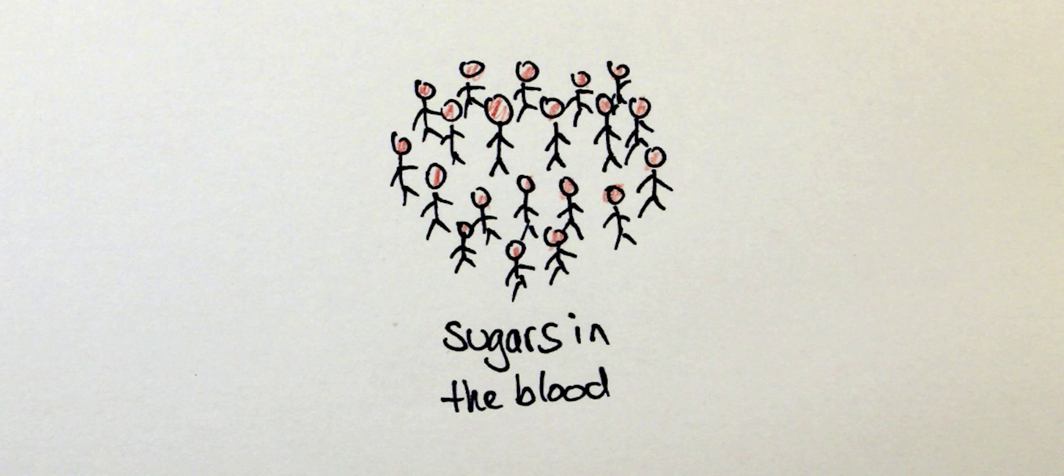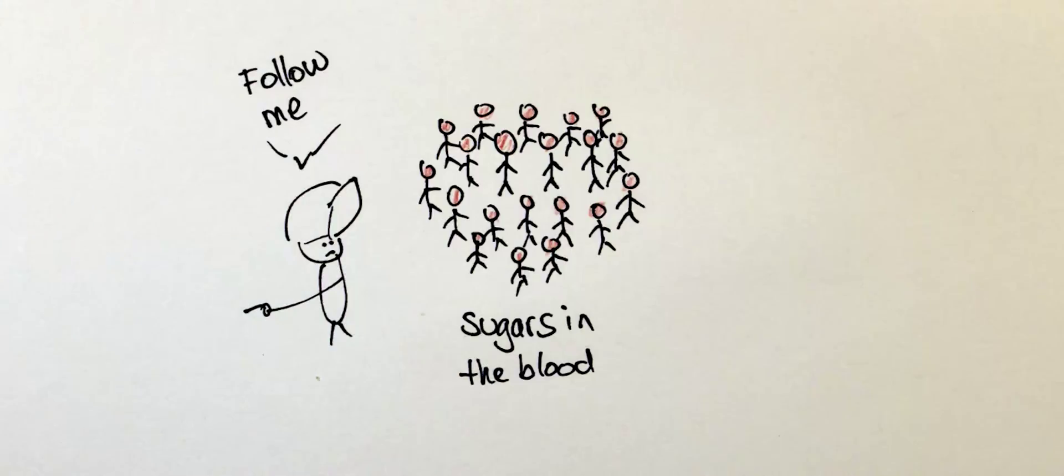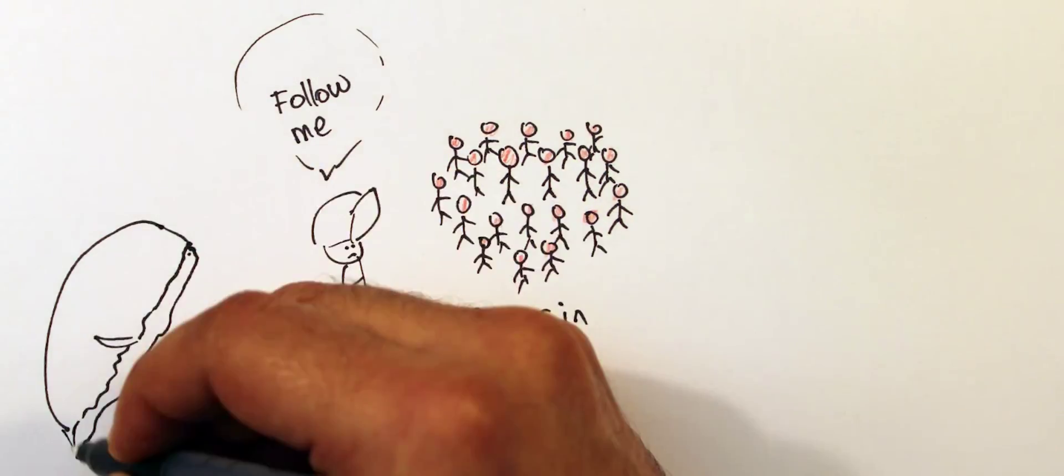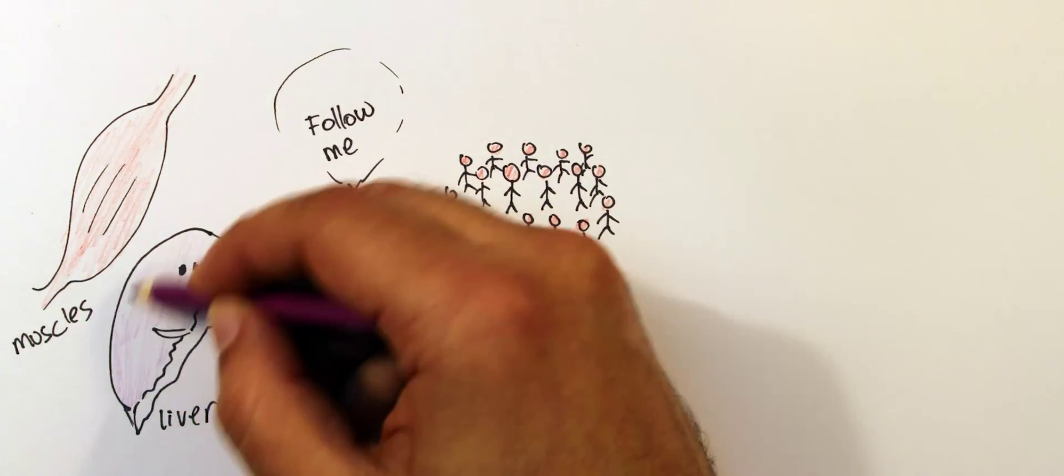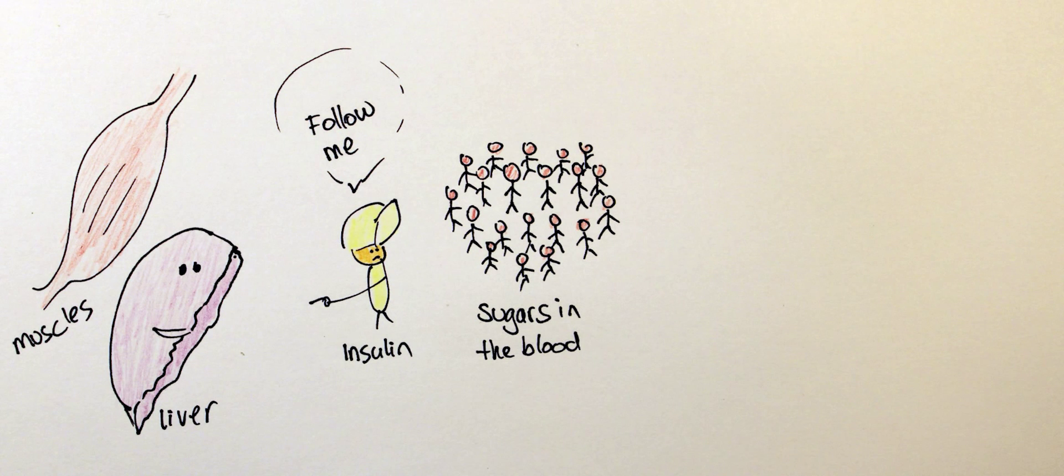Insulin works on reducing them by promoting the storage of blood sugar in the liver and muscles as glycogen. With chronic stress, the continuous supply of cortisol induces persistently high levels of sugars in the blood. Insulin continues to promote sugar storage in the liver and muscles.